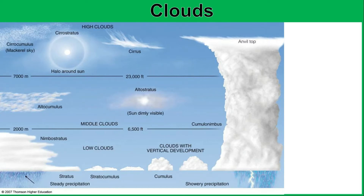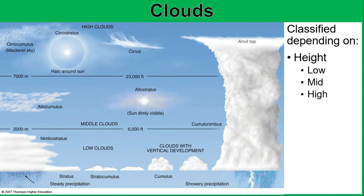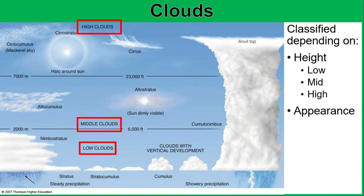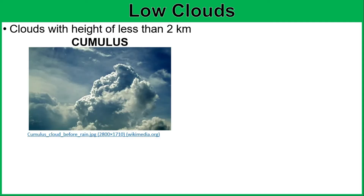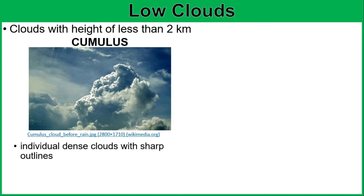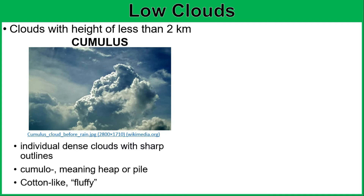There are 10 general types of clouds, classified depending on their height — low, mid, and high — and their corresponding precipitation. First, we have the low clouds, with a height of less than 2 kilometers. We have 4 types under this category. The first is the cumulus cloud — individual dense clouds with sharp outlines, often developed vertically. Their name comes from the Latin prefix cumulo, meaning heap or pile, and they are described as cotton-like or fluffy.